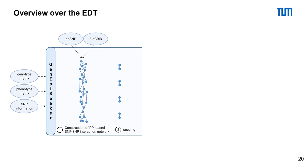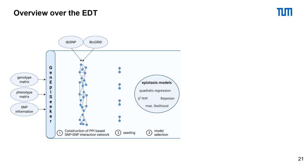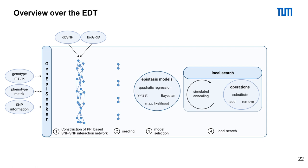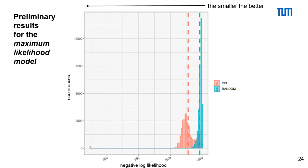As a first step, GnEBseeker constructs a PPI-based SNP-SNP interaction network and conducts seeding afterwards. Then, the model we want to use is selected. GnEBseeker offers the models most commonly used in literature as well as a newly developed maximum likelihood model. GnEBseeker also supports multi-model approaches. Afterwards, GnEBseeker uses local search including simulated annealing to determine the best scoring SNP sets on the network. As an output, we retrieve candidate SNP sets.